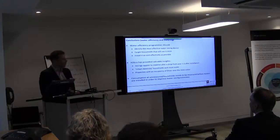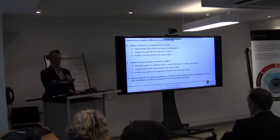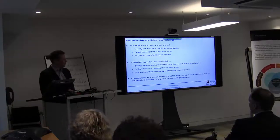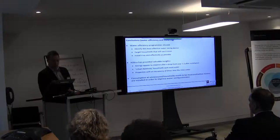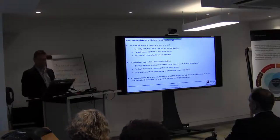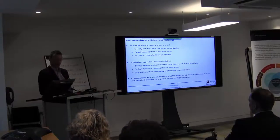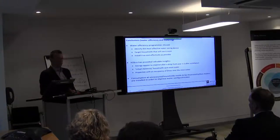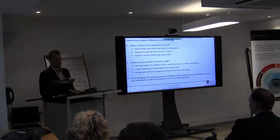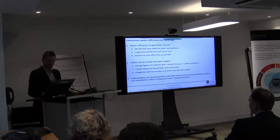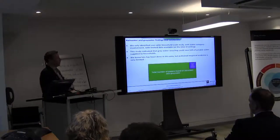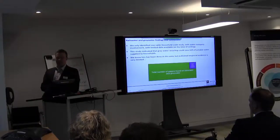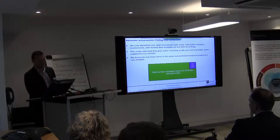Properties with an occupancy of three also save the most water. Perhaps with a household size of three, people can communicate with each other effectively. It may be that the household is still forming - maybe with a young child. And just returning to the point that consumption of unmeasured households needs to be measured before meters are installed, if we're going to improve the estimates of metering programme savings.